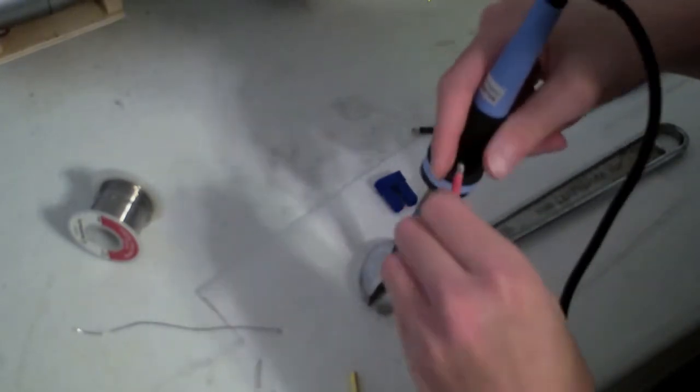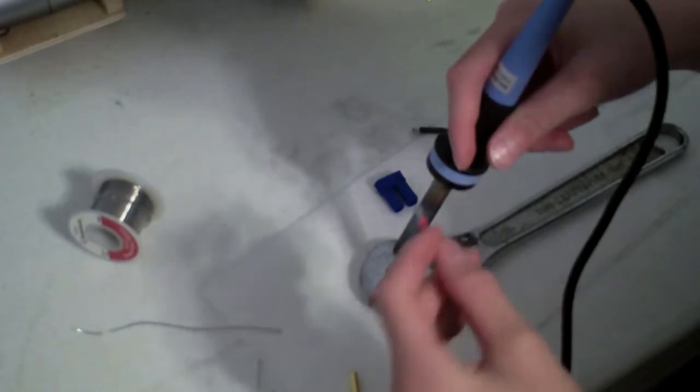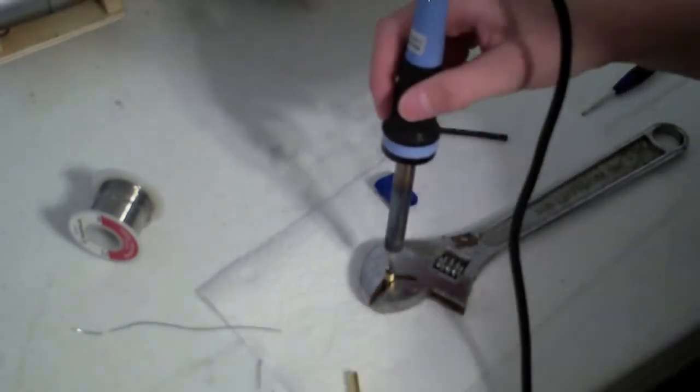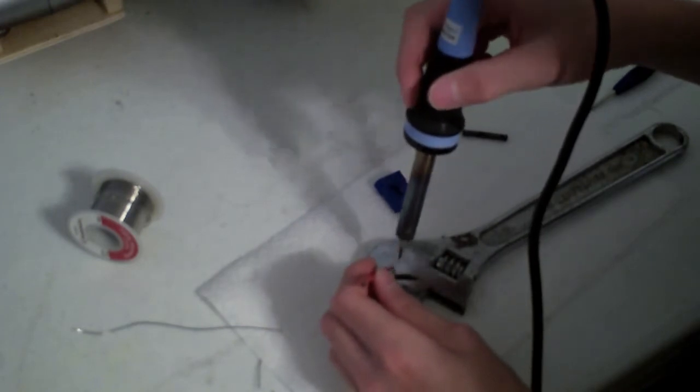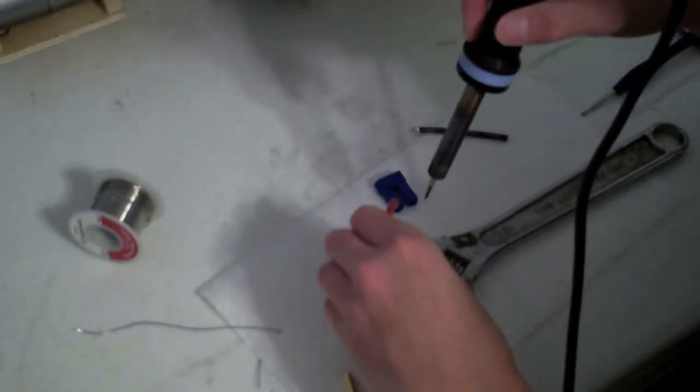Make sure the tip of the wire is pretty clean and not too many wires sticking out. Okay, then heat it up right there and then just take your soldering iron out and then stick the wire in there.